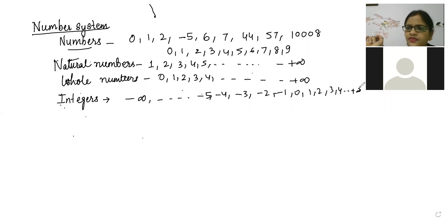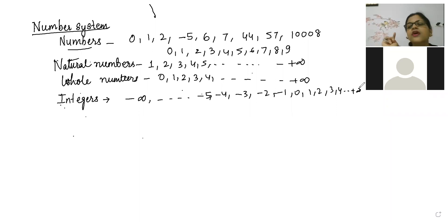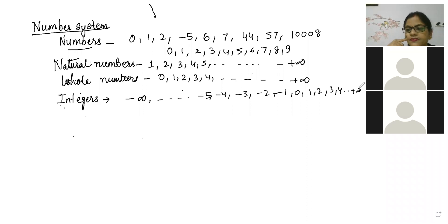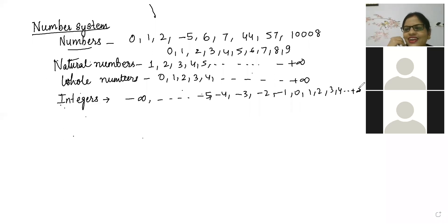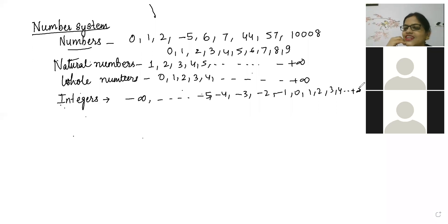One question: is zero a positive number or a negative number? It is neither positive nor negative — a neutral answer from Ashwin. Zero is that number which is not influenced by both positive and negative sign. Plus zero means zero only, minus zero means zero only.